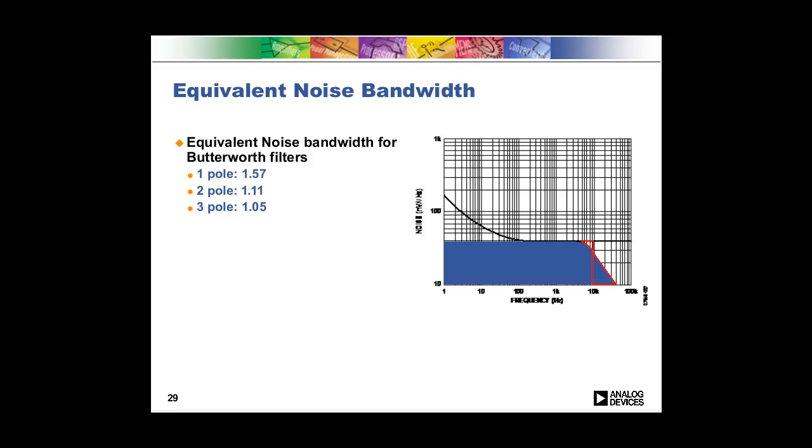So if you want to be really accurate in what you're doing, then you can go look up the equivalent noise bandwidth for your specific filter. Typically, when you're trying to do noise calculations, what you do is if you've got a one-pole filter, you use the 1.57. And if you have something more than a one-pole filter, you just say that it's close enough and we just assume that my equivalent noise bandwidth is one. So that's for quick and dirty calculations.